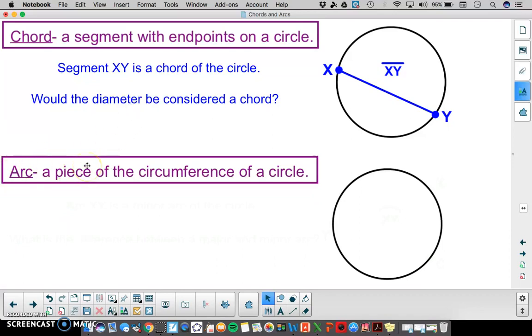Now we have an arc. An arc of a circle is a piece of the circumference of a circle. Remember the circumference is all the way around. So an arc would be just a piece of that. So from X to Y around the edge of the circle that would be our arc.